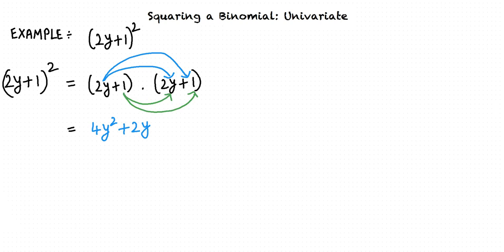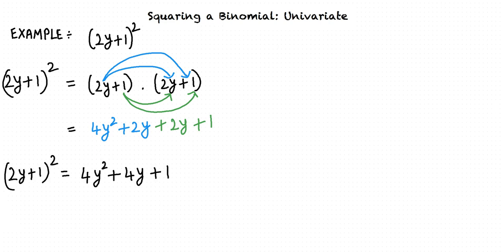We multiply 1 by 2y and 1 by 1 and then incorporate signs. 1 times 2y is 2y and 1 times 1 is 1. Thus, we get 2y plus 1 whole square equals 4y squared plus 4y plus 1.